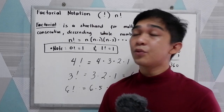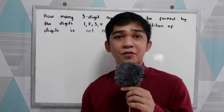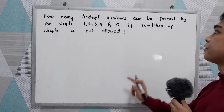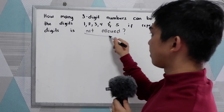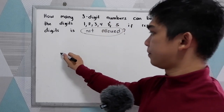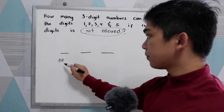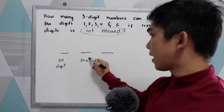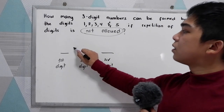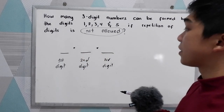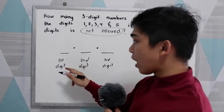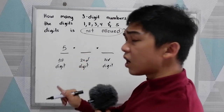Now let's have another example on how to use the factorial. The problem asks: how many three-digit numbers can be formed by the digits 1, 2, 3, 4, and 5 if repetition of digits is not allowed? We are going to form a 3-digit number, so we have a first digit, a second digit, and a third digit. We determine how many numbers are available — we have 1, 2, 3, 4, 5, so 5 numbers are available for our first digit.